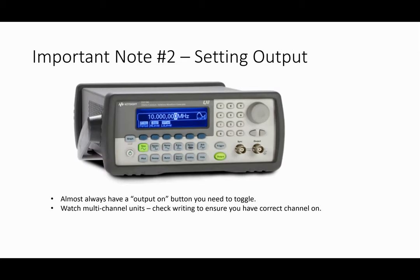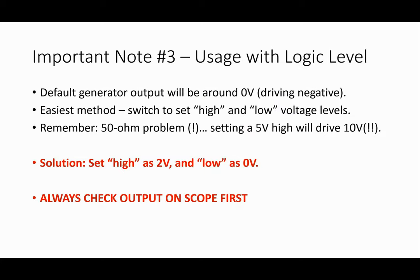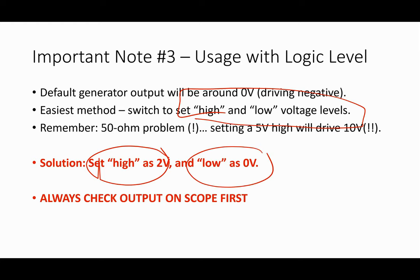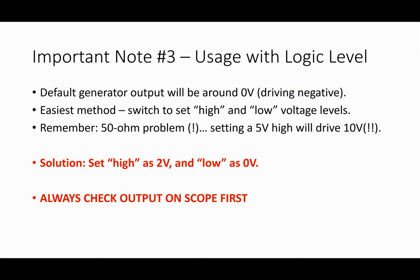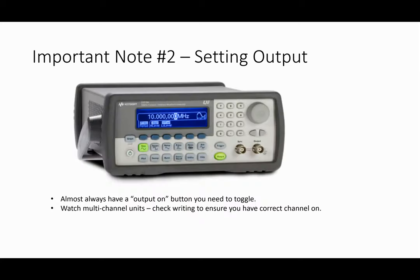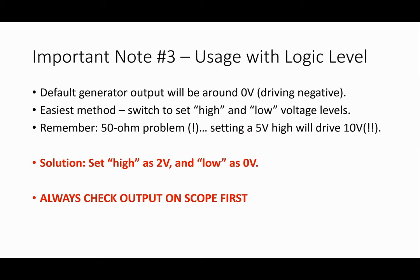So these ones don't have it, so just remember you're going to get twice the voltage. Always the best solution is to check the output on the scope first and then plug it into your circuit. You can also set high and low voltage levels — so if you say hey, I want to generate a 0 to 5 volt square wave, I could set my high level as about 2 volts for a bit of margin and my low as 0 volts. So now it's specifically going to drive only 0 to 2 volts. The other caveat is the default output settings are driving around 0 volts, so if you ask for 5 volts it's generating plus 2.5 to minus 2.5 into your load.